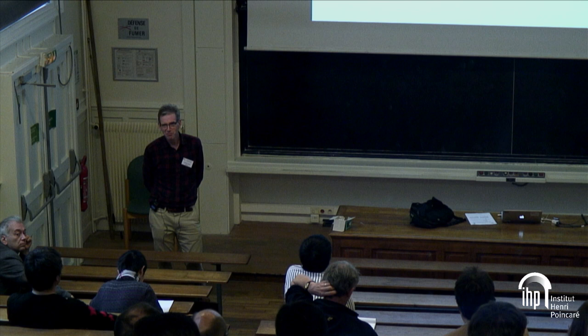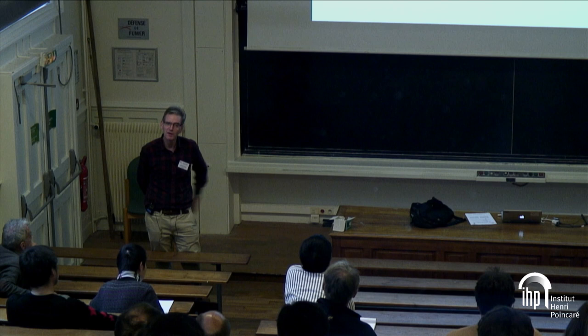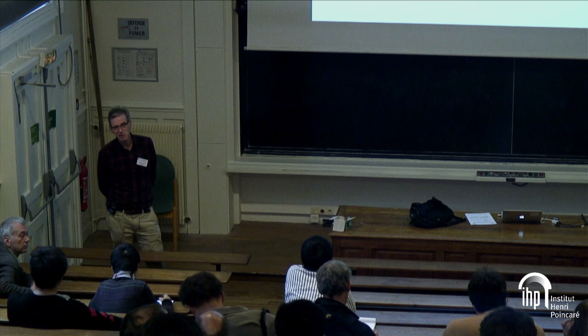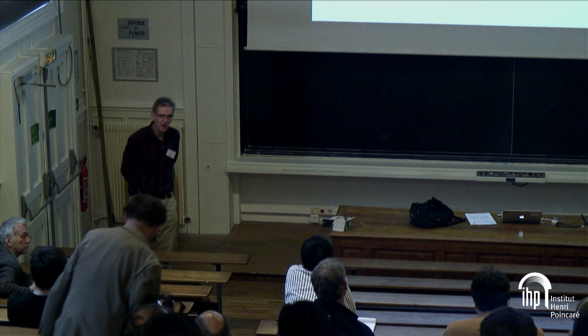Part of the purpose of my talk is to advertise how freeness can come into quantum information theory and hope that some people in quantum information theory will figure out some way to use that. We saw from Roland's talk that when you have operators that are free, there are rules for computing distributions. But you can't use those rules unless you know that you have freeness. My contribution is to show that in certain cases you do have freeness, and therefore all the rules of free probability can be applied to do calculations.